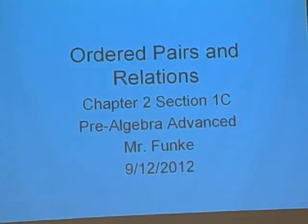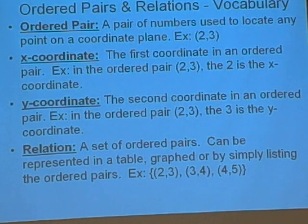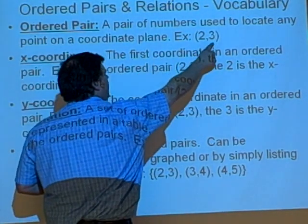We're going to start off with some vocabulary here. Ordered pairs and relations vocabulary. The ordered pair: an ordered pair is a pair of numbers used to locate any point on a coordinate plane. For example, (2,3).